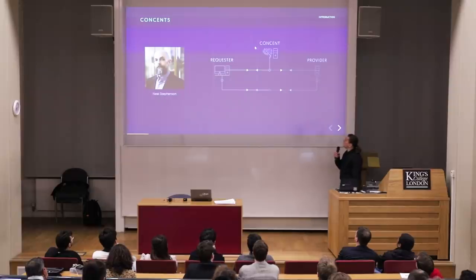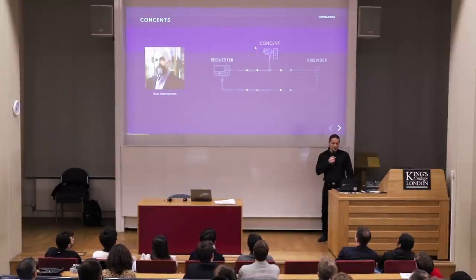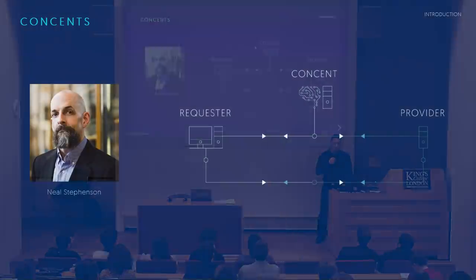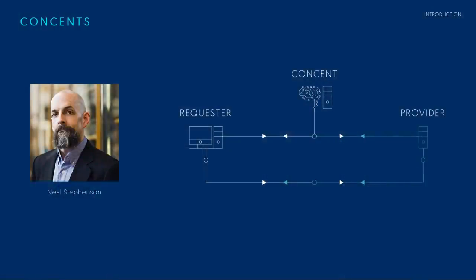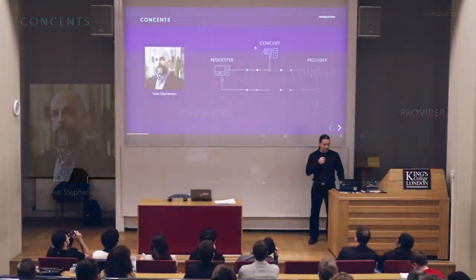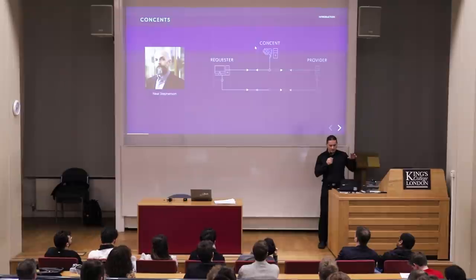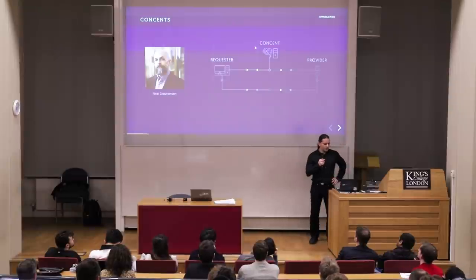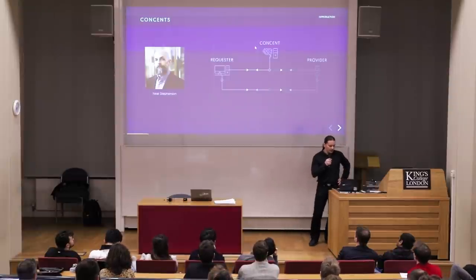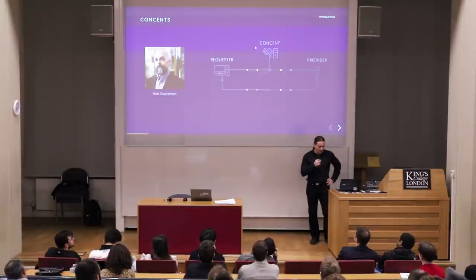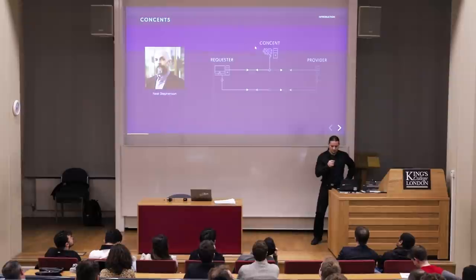One additional actor in our network is the concent — a special purpose, optional entity that secures the network. It increases the guarantees that computations are valid, that payments are securely and verifiably transferred, and that communication between providers and requesters is assisted in cases when one party goes offline. Concent is there to assure that delivery eventually happens.